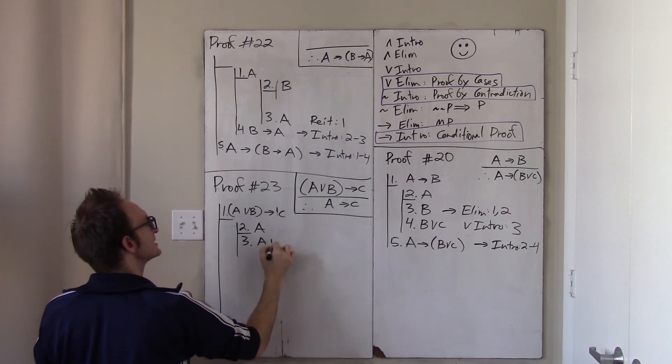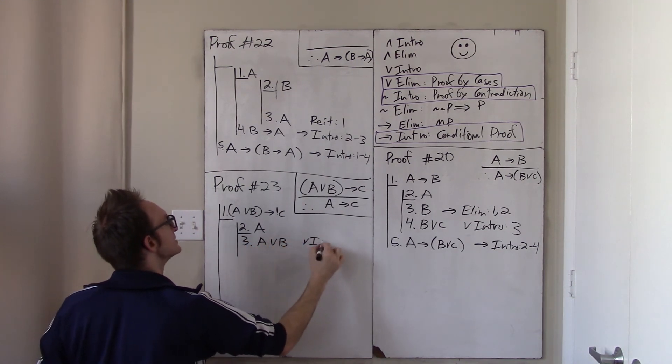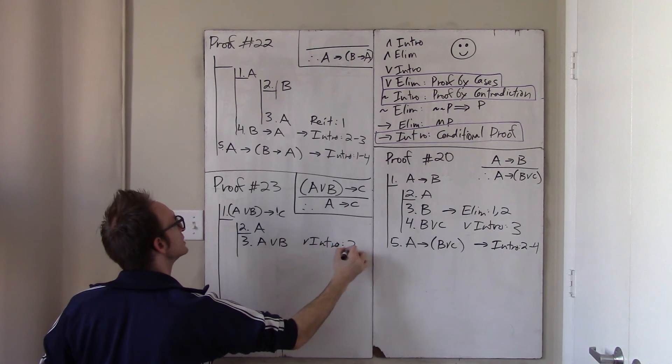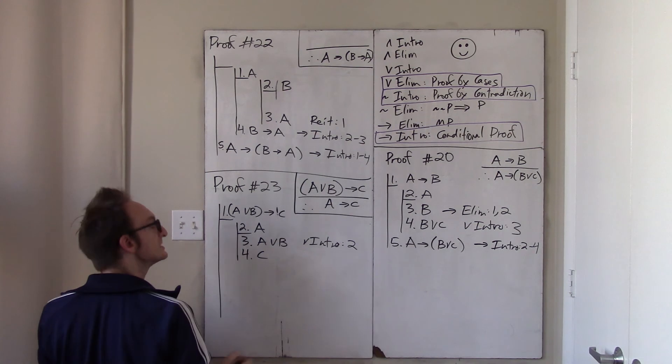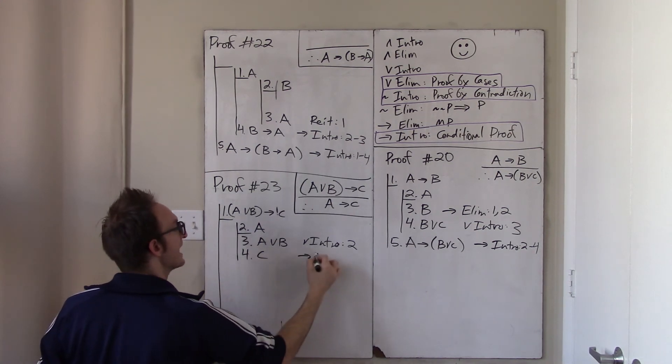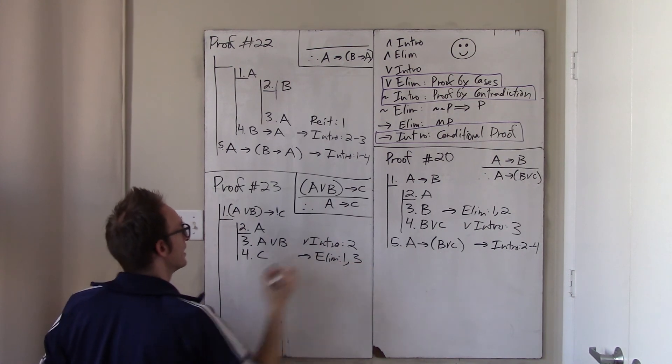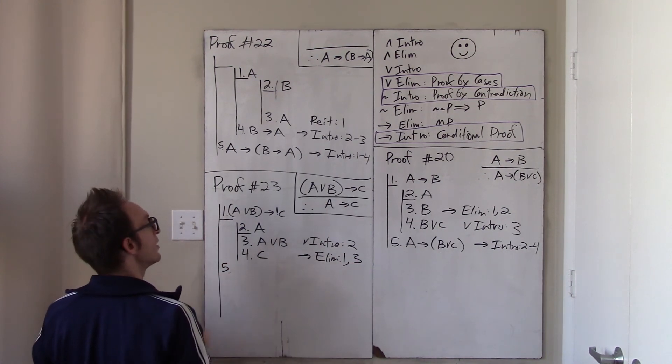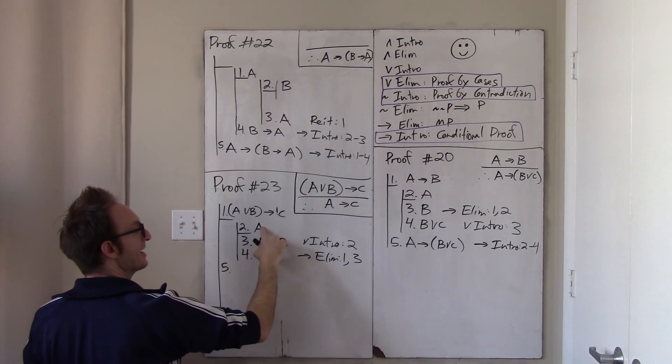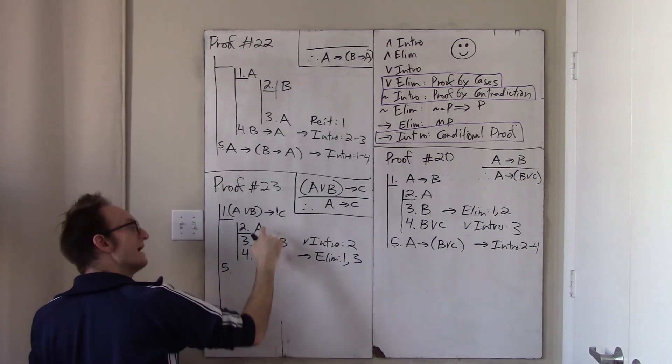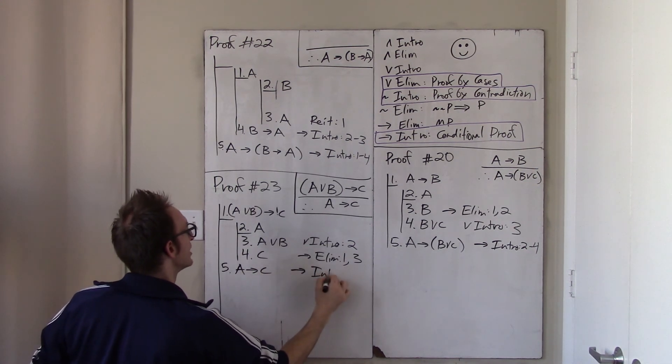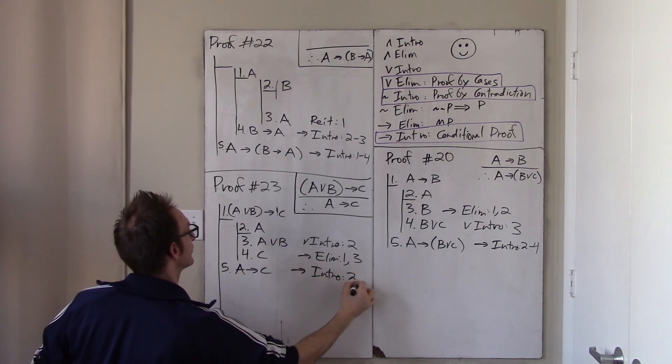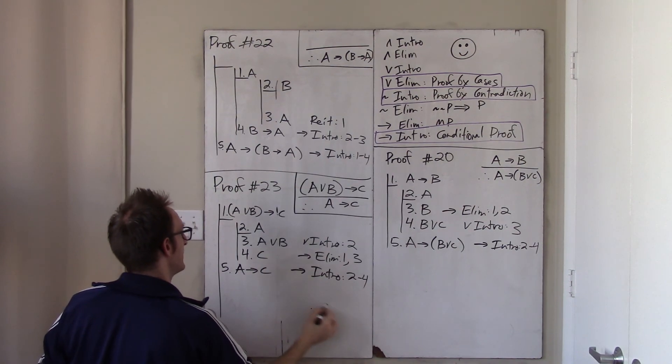But then line three together with line one immediately gives me C, which is what I wanted. That's arrow Elim, one and three. Okay, so, what do I have? I set out to prove if A then C. I assumed A. I derived C. I conclude if A then C. Reason, arrow intro, two through four. All right, that is it.